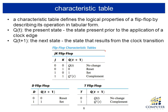Flip-flop behavior can be expressed using a characteristic table. Note that the term 'truth table' is only for combinational circuits; since we are dealing with sequential circuits, the table is called a characteristic table. For the JK flip-flop, we list all input combinations of J and K, and the output column is labeled Q(t+1), meaning the value of Q on the next clock tick. Q(t) means the current value of Q.